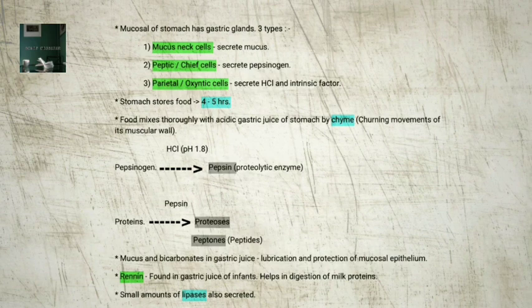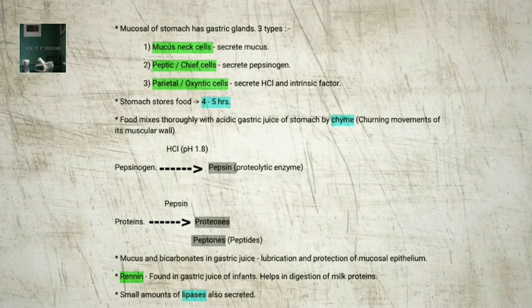The proenzyme pepsinogen, on exposure to hydrochloric acid, gets converted into the active enzyme pepsin, the proteolytic enzyme of the stomach. Pepsin converts proteins into proteoses and peptones. The mucus and bicarbonates present in the gastric juice play an important role in lubrication and protection of the mucosal epithelium from excoriation by the highly concentrated hydrochloric acid. HCl provides the acidic pH of 1.8, optimal for pepsin. Renin is a proteolytic enzyme found in gastric juice of infants which helps in the digestion of milk proteins. Small amounts of lipases are also secreted by the gastric glands.